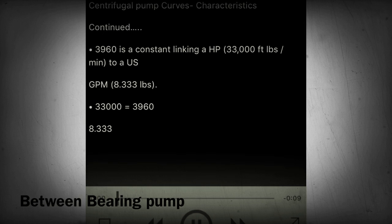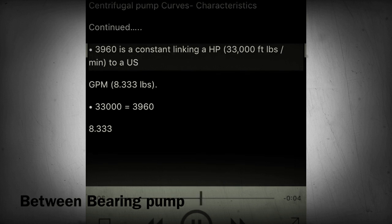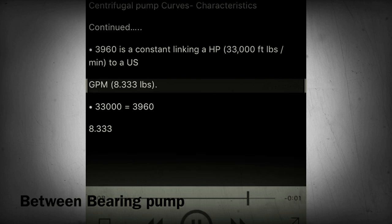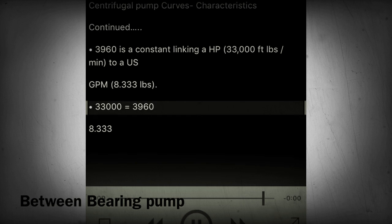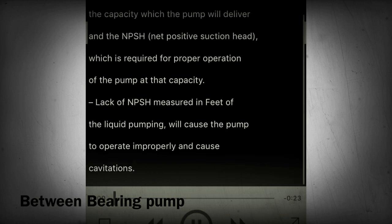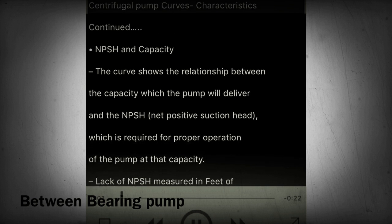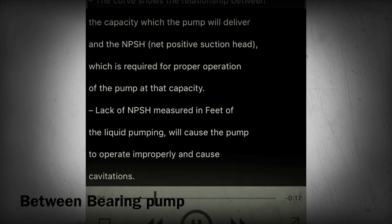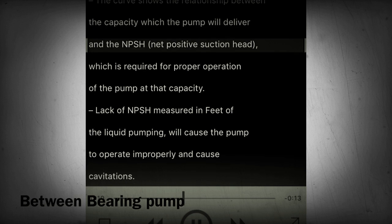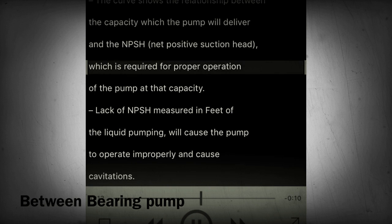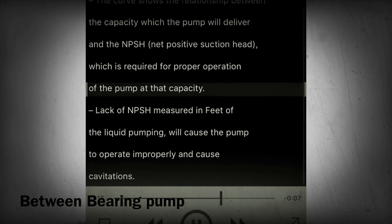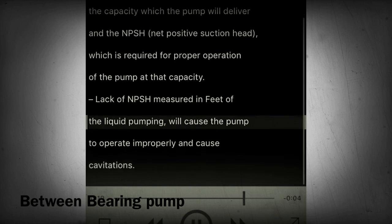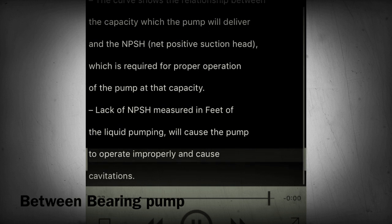Section 25 - The constant 3,960 links HP (33,000 ft-lbs/min) to US GPM (8.333 lbs), since 33,000 ÷ 8.333 = 3,960. Section 26 - NPSH and capacity: the curve shows the relationship between the capacity the pump will deliver and the NPSH (net positive suction head) required for proper operation of the pump at that capacity. Lack of NPSH, measured in feet of the liquid being pumped, will cause the pump to operate improperly and cause cavitation.